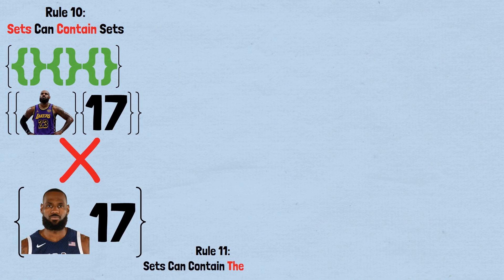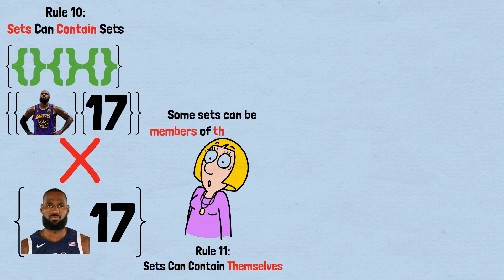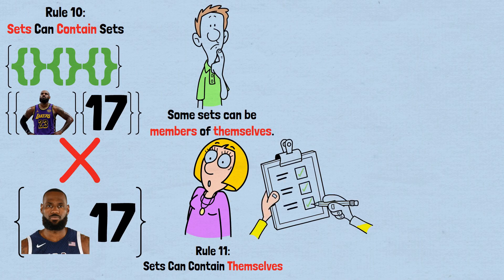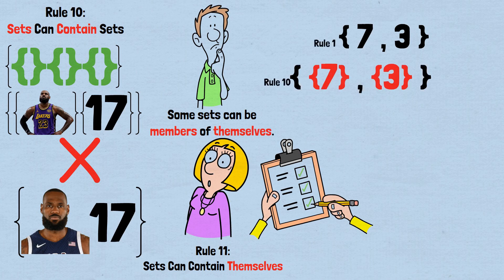Rule 11, sets can contain themselves. This is where things get strange. Some sets can be members of themselves. This last rule might seem odd, but it follows naturally from the others. If we can create any set, rule one, and sets can contain sets, rule 10, then logically, some sets should be able to contain themselves.